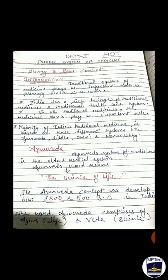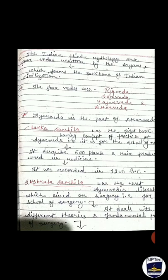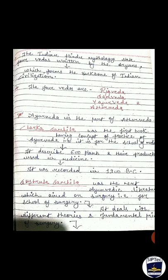The first thing we are going to discuss is Ayurveda. The Ayurvedic system of medicine is the oldest medical system. The word Ayurveda means the science of life. The concept of Ayurveda was developed between 2500 and 500 BC, that is Before Christ, in India. The word Ayurveda comprises of 'Ayur' and 'Veda' — Ayur means life and Veda means science.